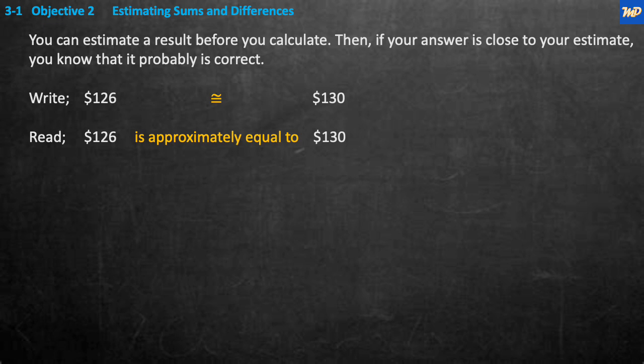Our next objective — objective two — is estimating sums and differences. You can estimate a result before you calculate it; then, if your answer is close to your estimate, you know that it's probably correct. For example, you can write $126 is approximately equal to $130 — you read it as '$126 is approximately equal to $130.' That's what we're trying to do: estimate.